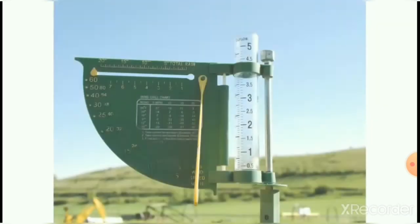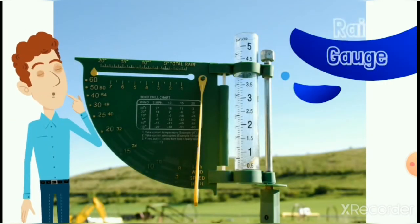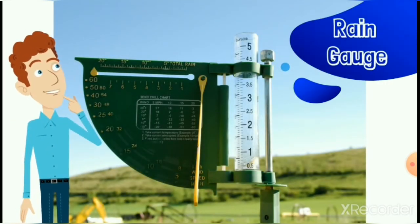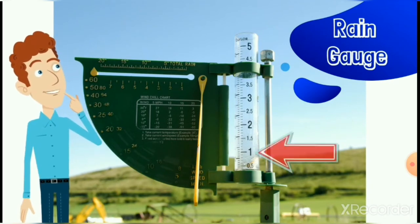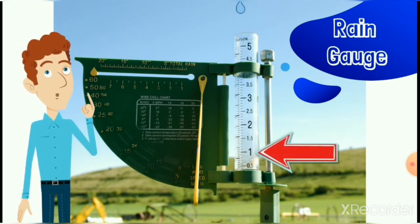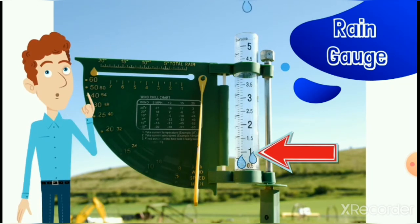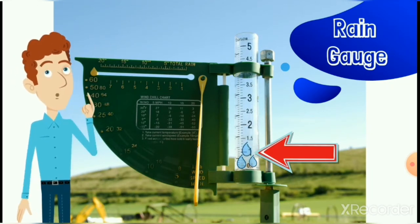Thermometer is used to measure the temperature. Next is the rain gauge. It is a tool to measure rainfall in millimeters, as rain falls into a clear measuring container that helps to measure the rain.